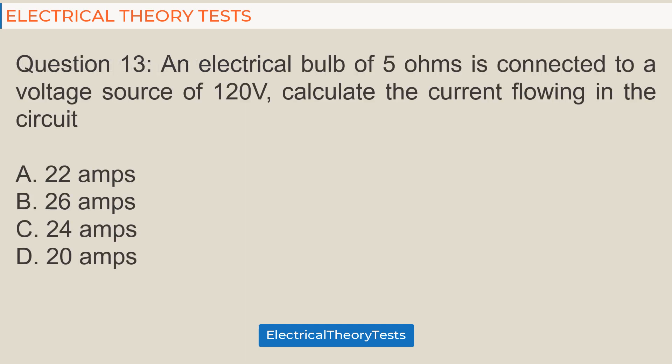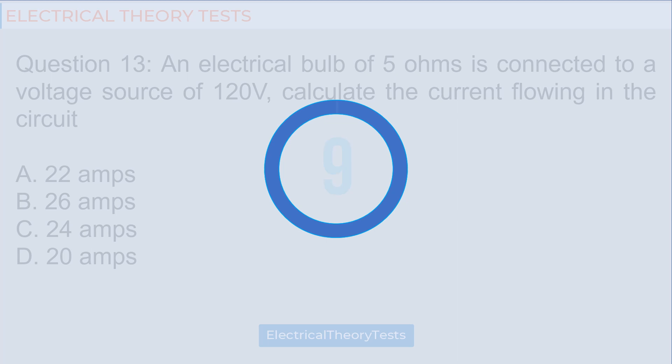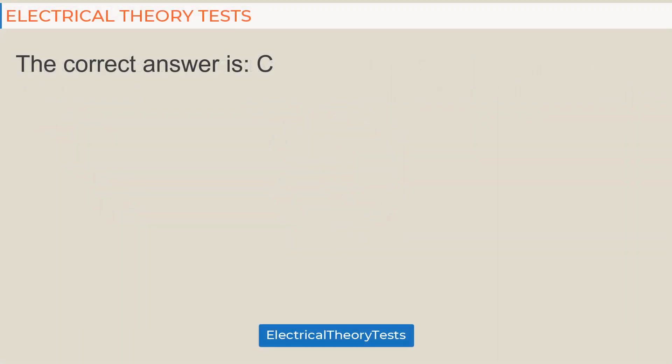Question 13: An electrical bulb of 5 ohms is connected to a voltage source of 120 volts. Calculate the current flowing in the circuit: A. 22 amps, B. 26 amps, C. 24 amps, D. 20 amps. The correct answer is C.